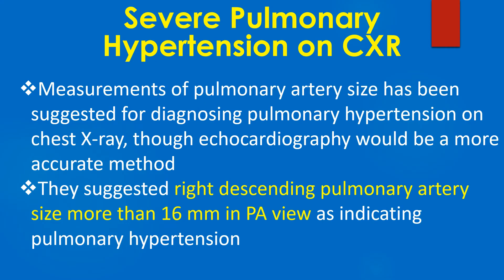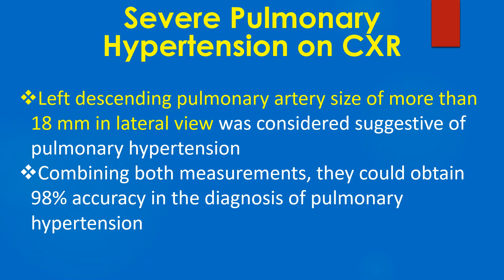Measurements of pulmonary artery size have been suggested for diagnosing pulmonary hypertension on chest X-ray, though echocardiography would be a more accurate method. A right descending pulmonary artery size of more than 16 mm on PA view indicates pulmonary hypertension, and a left descending pulmonary artery size of more than 18 mm on lateral view is also considered suggestive. Combining both measurements, they could obtain 98% accuracy in the diagnosis of pulmonary hypertension.